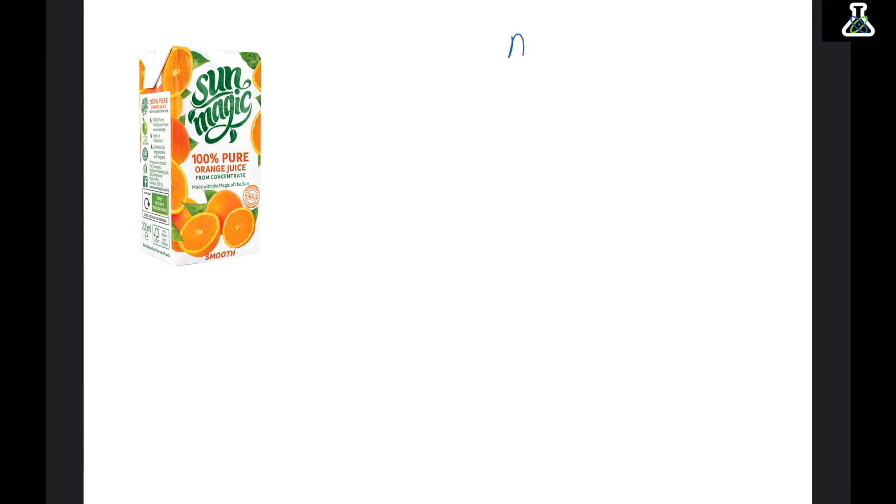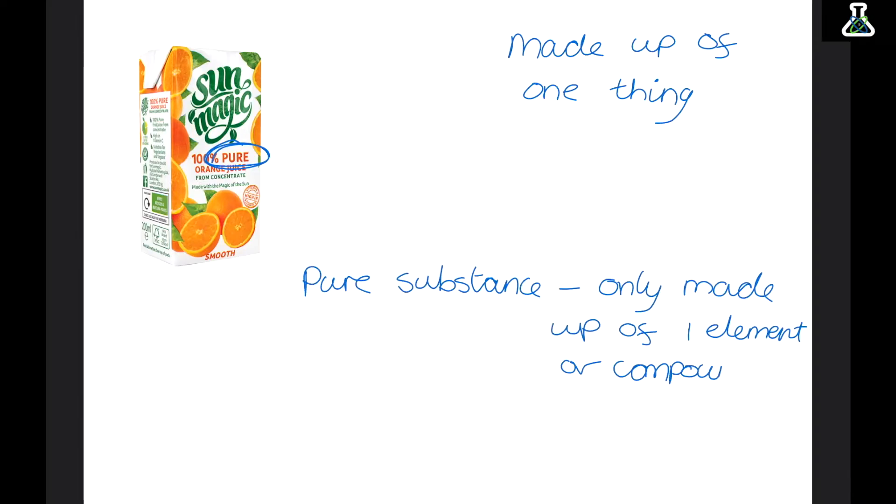So the word pure means made up of one thing. Now we use this word quite a lot both in chemistry and outside. So a good example is on orange juice. We say that orange juice is pure. And this is technically correct. It's only made up of orange juice. They've not added anything else. But in chemistry we need to be a lot more specific. We need to say it's only made up of one element or compound. So instead of saying one thing we're being a lot more specific and saying an element or a compound. A mixture is then lots of substances all mixed together but not bonded. They're just existing together.